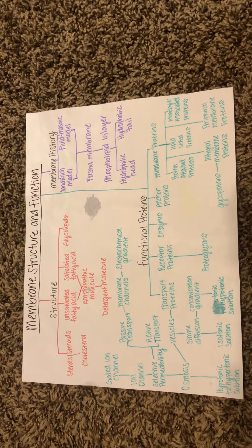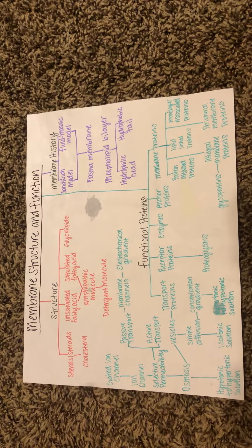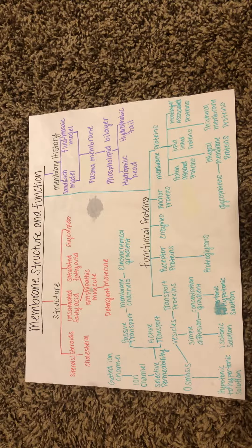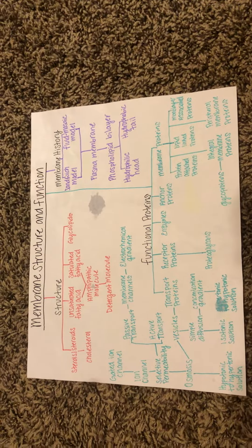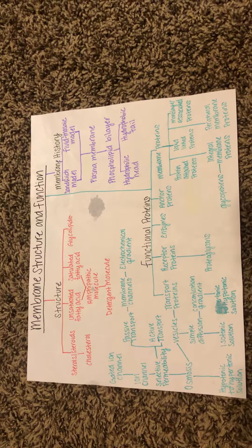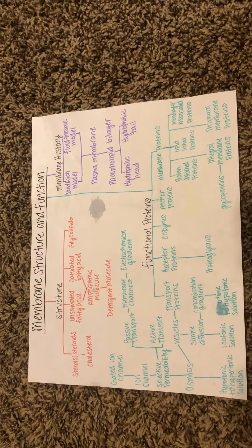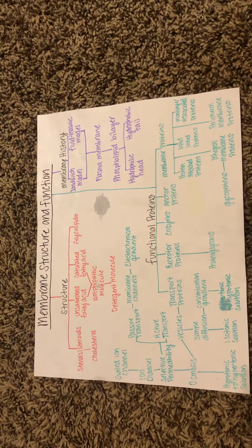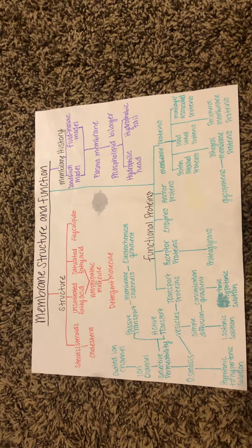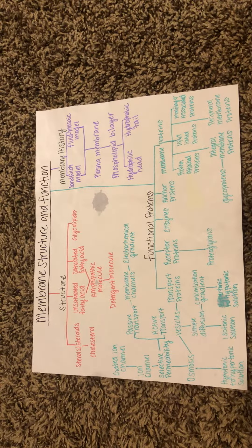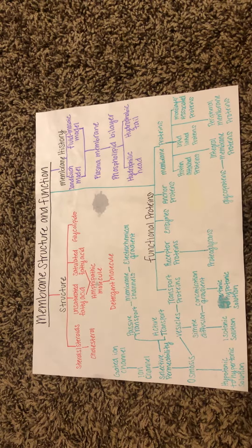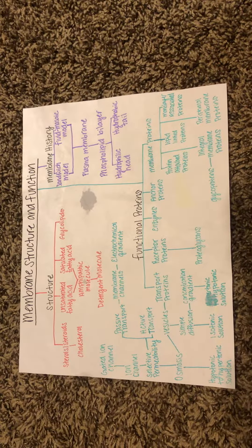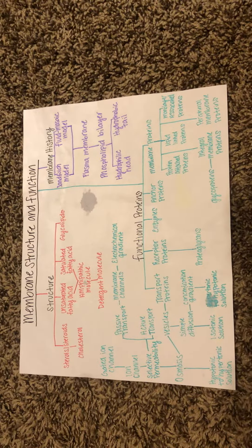For the structure, sterols, glycolipids help provide the structure of the membrane. Unsaturated fatty acids give it some fluidity, and saturated fatty acids help with thermal regulation. The fatty acids are an example of an amphipathic molecule, and amphipathic molecules help form detergent molecules.